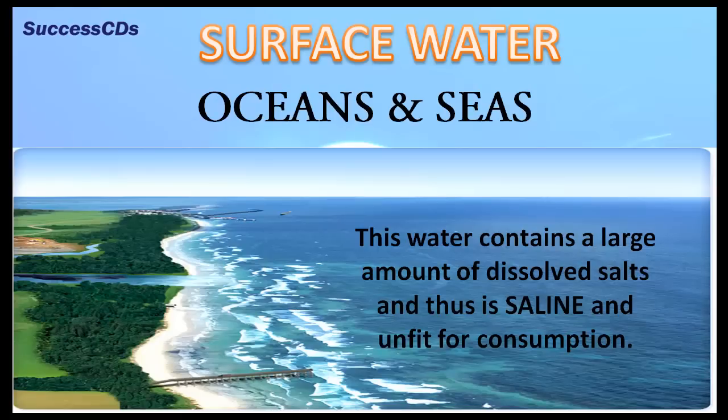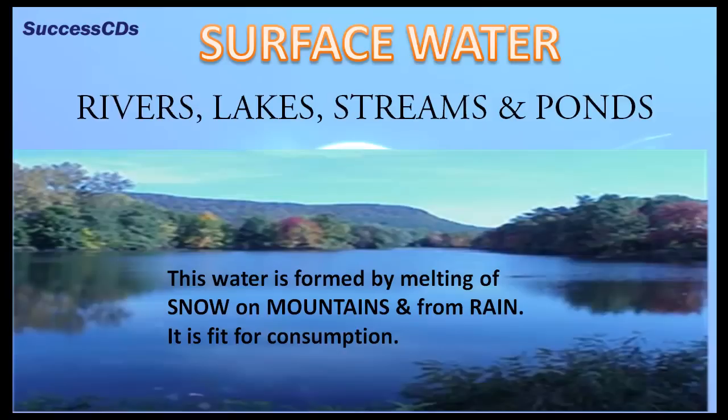Surface water is present in oceans and seas. This water contains a large amount of dissolved salts and thus is saline and unfit for consumption. Surface water is also found in rivers, lakes, streams, and ponds.